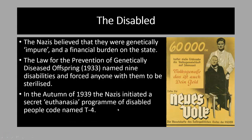The Nazis believed that people with disabilities were a burden on society — as shown in propaganda posters emphasizing the expense of caring for a disabled person — and that they were weakening racial purity. So in 1933, they passed the Law for the Prevention of Hereditarily Diseased Offspring, which made it compulsory to sterilize people who were mentally ill, alcoholic, deformed, epileptic, deaf, or blind. It is estimated that about 400,000 people were sterilized by 1939.